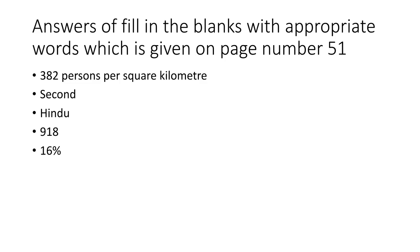These are the answers for fill in the blanks with appropriate words, given in the textbook on page number 51. The first answer is 382 persons per square kilometer, the second answer is the word 'second' itself, the third one is Hindu, the fourth one is 918, and the fifth one is 16 percent.